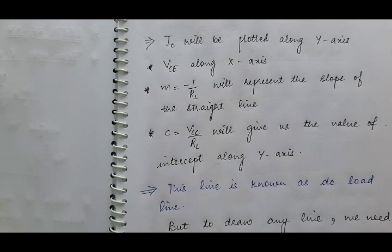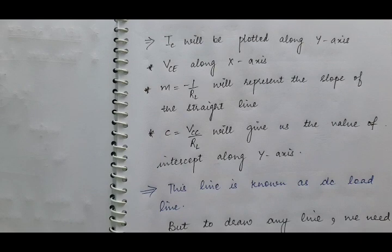As this equation number 1 is the equation of a straight line, this straight line is known as the DC load line. So now we have to plot this DC load line on the graph.